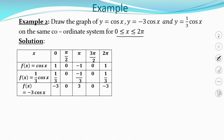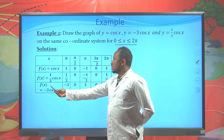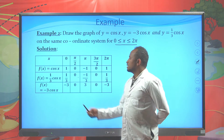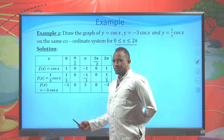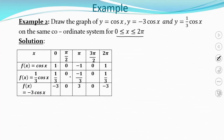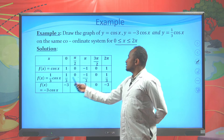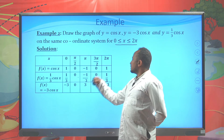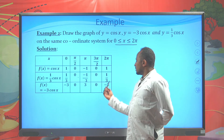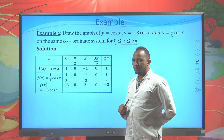For f(x) = 1/3·cos(x), multiply each cos(x) value by 1/3: we get 1/3, 0, -1/3, 0, 1/3. For f(x) = -3cos(x), multiply each cos(x) value by -3: -3×1=-3, -3×0=0, -3×(-1)=3, -3×0=0, -3×1=-3. After preparing this table, we can draw the graphs.